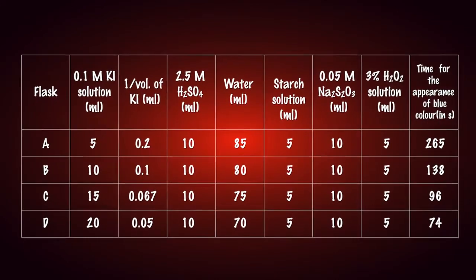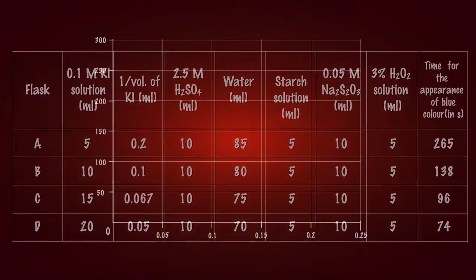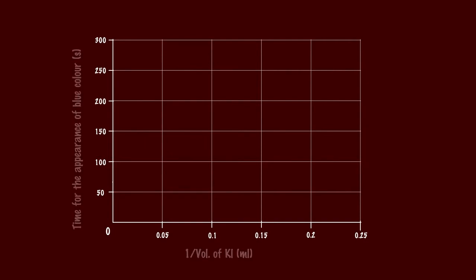Record the observations in a tabular column. Plot a graph between the time taken for the appearance of blue colour along ordinate and 1 by volume of potassium iodide along the abscissa. It should be a straight sloping line.